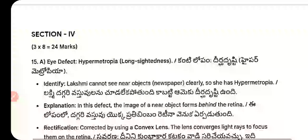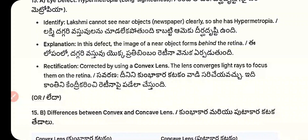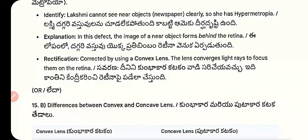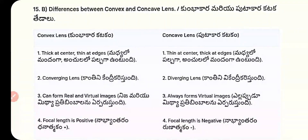Section 4 answer — Lachmi has hypermetropia (long-sightedness). She cannot see near objects (newspaper) clearly. In this defect, the image of a near object forms behind the retina. Rectification: corrected by using a convex lens, which converges light rays to focus on the retina.